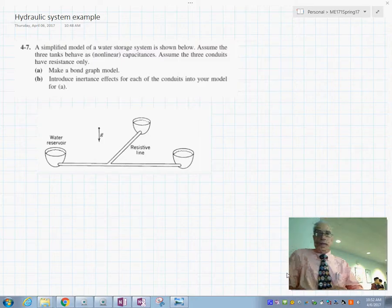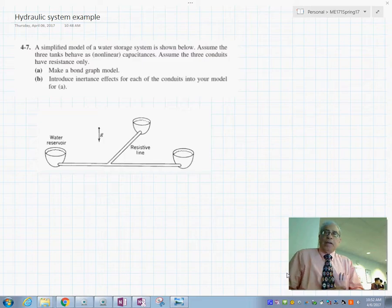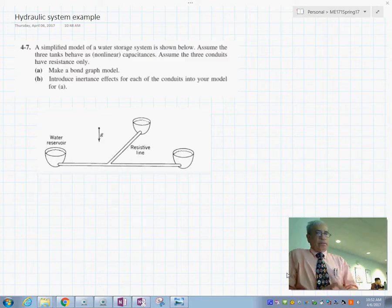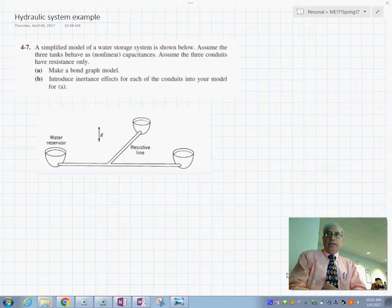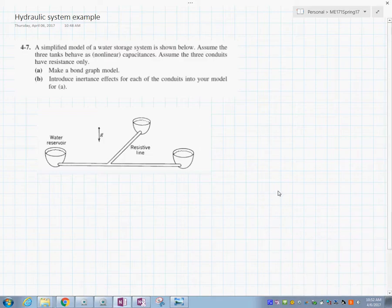Today we're going to see an example of a hydraulic system that requires us to establish the bond graph model for the system and also make some modifications to it. So let's start. Let's read what this problem statement is first.